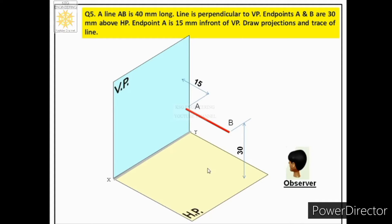Let us project the front view. From endpoints B and A we get only one projector from the front, which projects the image of the line as a point — that is the front view of the line. When we look at the line from the front, we see point B first because endpoint A is behind endpoint B.